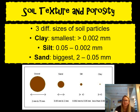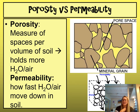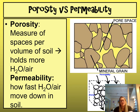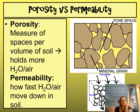Two other terms used when talking about soils are porosity and permeability, and these tie into soil particle size. Porosity is a measure of pore space between the soil particles — if there's a lot of pore space, we call that greater porosity. Permeability is how fast water or air can move down through the soils. If soils are very permeable, that means water or air can travel with ease through them.